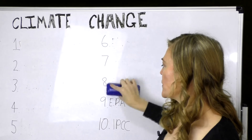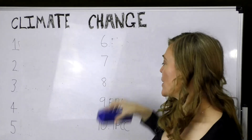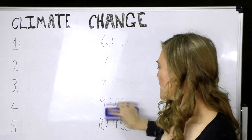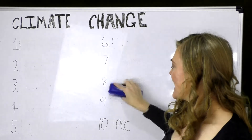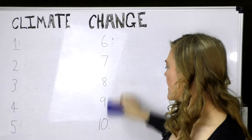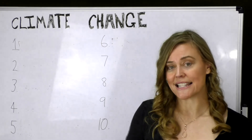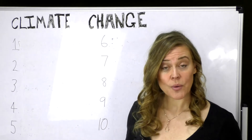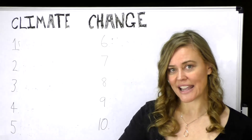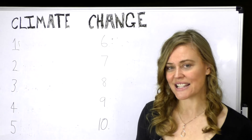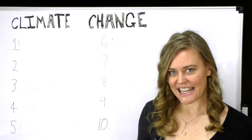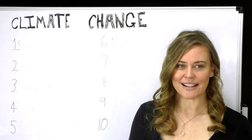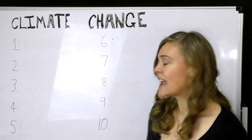Number eight: 'eight ball' — all the balls going everywhere — oscillate. Number nine: keyword 'cat,' the cat standing there like an agent protecting — Environmental Protection Agency. Number ten: keyword 'toes' — all the heads of state around our toes connecting together — the Intergovernmental Panel on Climate Change.